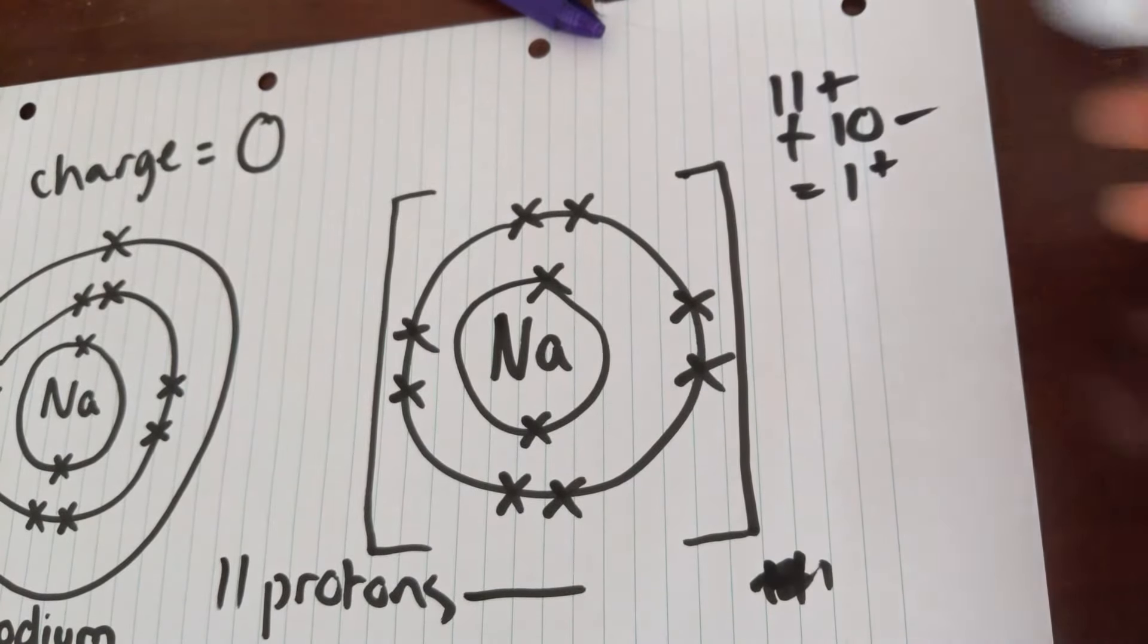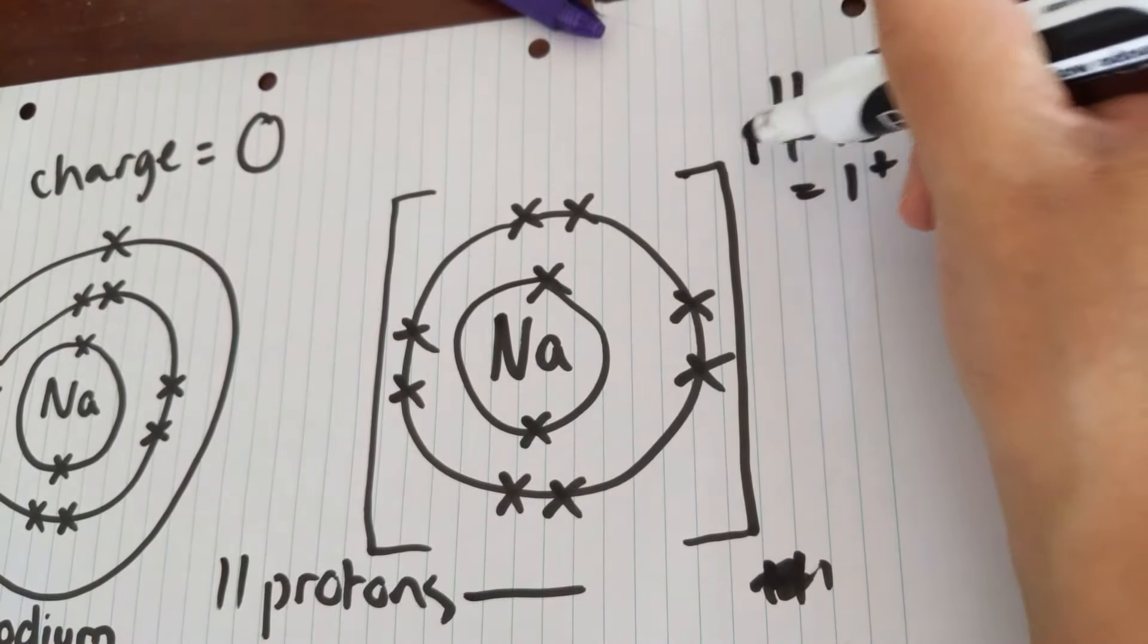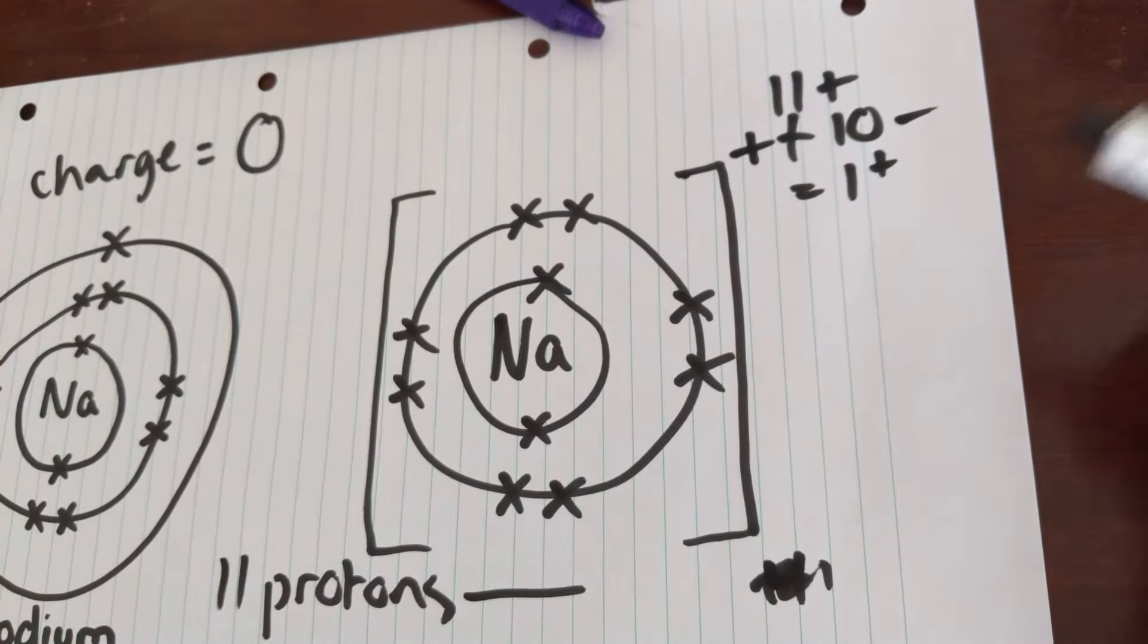We don't actually need to write the number when it's only one. So our charge is just going to be plus. If it was say magnesium, where it's going to lose two electrons, you would write two plus.